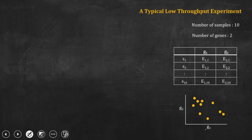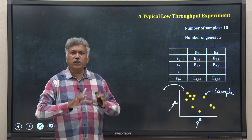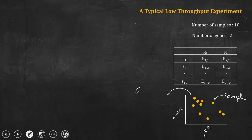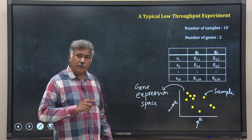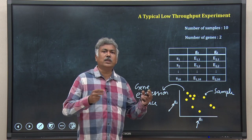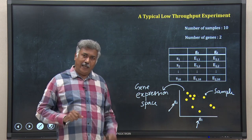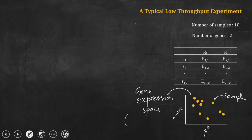What I will do is have gene 1 in the horizontal axis and the expression of gene 2 in the vertical axis. Now I have ten yellow dots here, each of these is a sample. This whole space where I have shown the position of each of these samples, each of these yellow dots, I can call this a gene expression space. And what is the dimension of this space? I have two genes, so the expression level of two genes shown on two axes — that means this is a 2-D space.